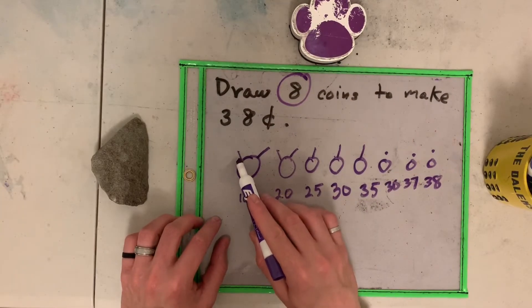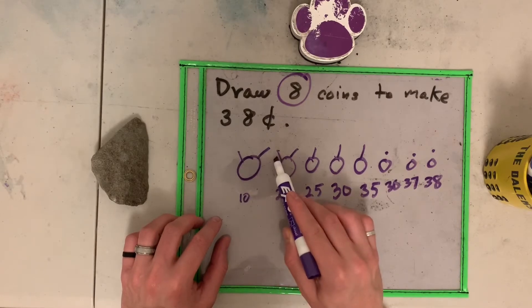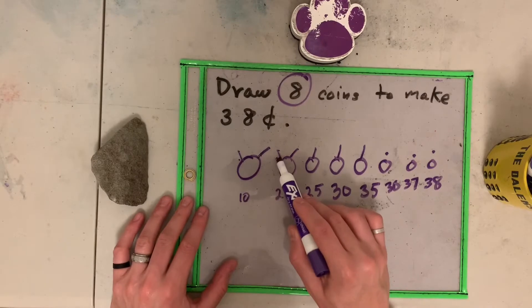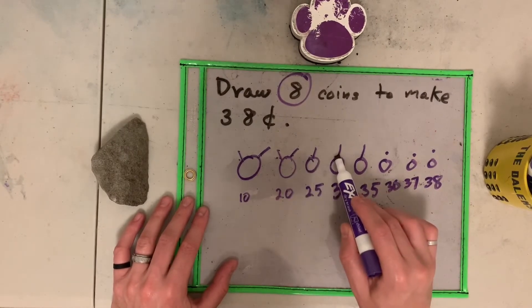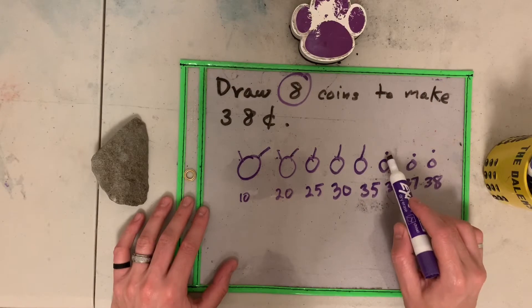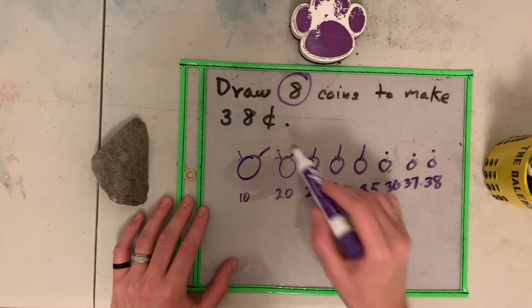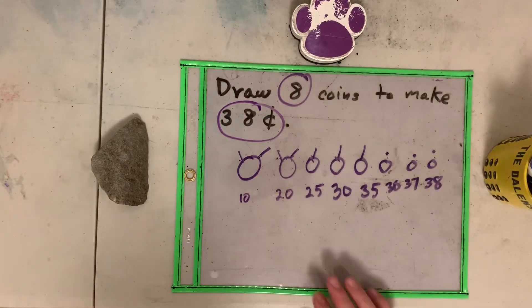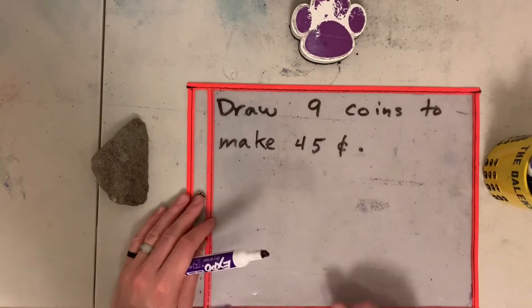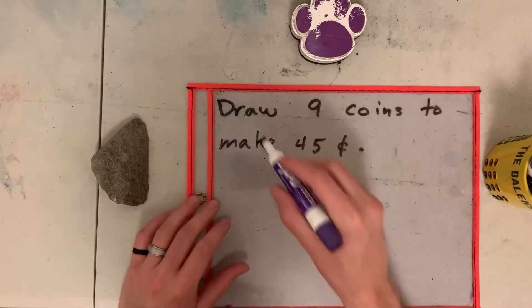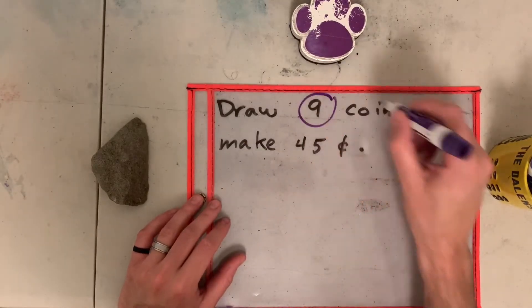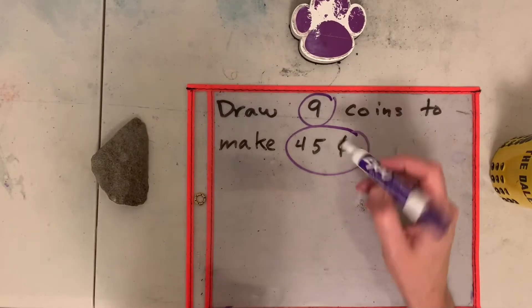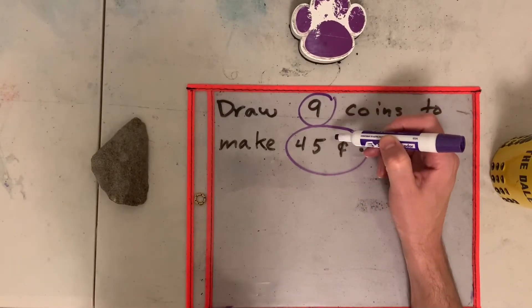Let's count the hairs. Five, ten, fifteen, twenty, twenty-five, thirty, thirty-five, thirty-six, thirty-seven, thirty-eight. And I have the thirty-eight cents. You're going to do the same thing, but this time you're doing with these numbers. So you're going to draw nine coins to make forty-five cents.